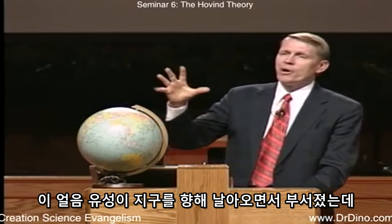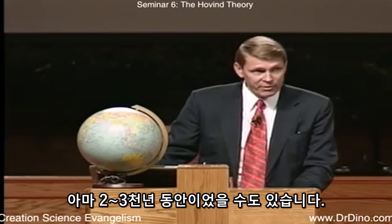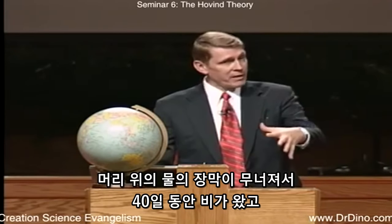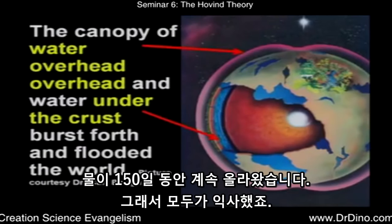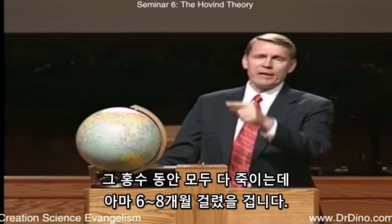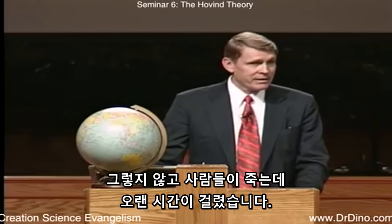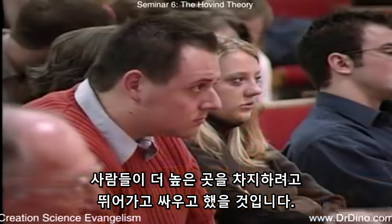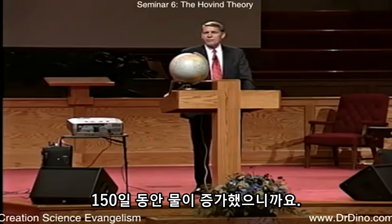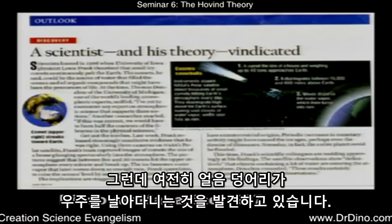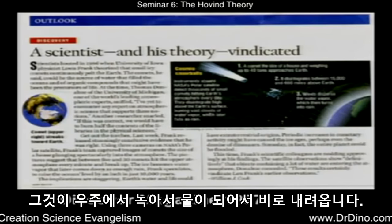As the ice meteor came flying toward the Earth and broke apart, pieces would settle around the poles mostly, causing the Earth to wobble for a few hundred or even a few thousand years. The canopy of water overhead collapsed and it rained forty days. The water under the crust came shooting to the surface, and the water kept rising for 150 days. It probably took six to eight months to kill everybody. People would be running and fighting for higher ground as the water kept coming up. They're still discovering chunks of ice flying around in space — one scientist found chunks as big as an auditorium hitting the Earth all the time, dissolving and raining down as water.